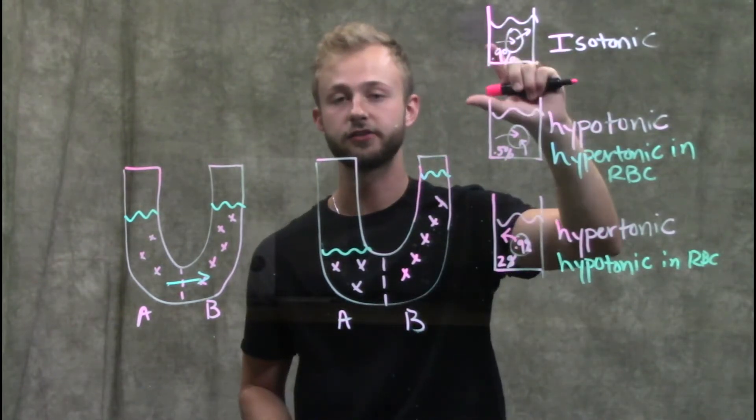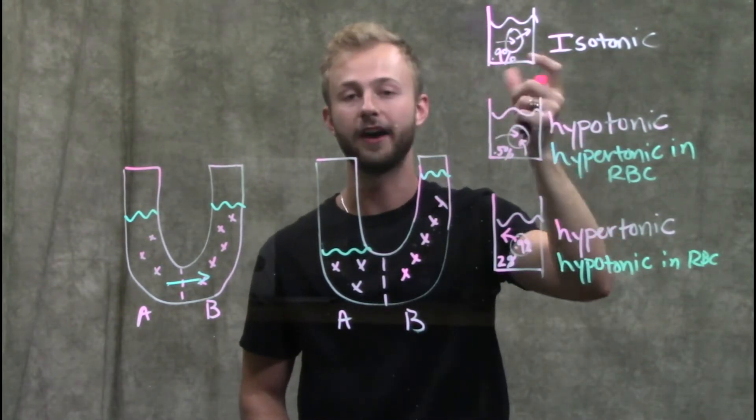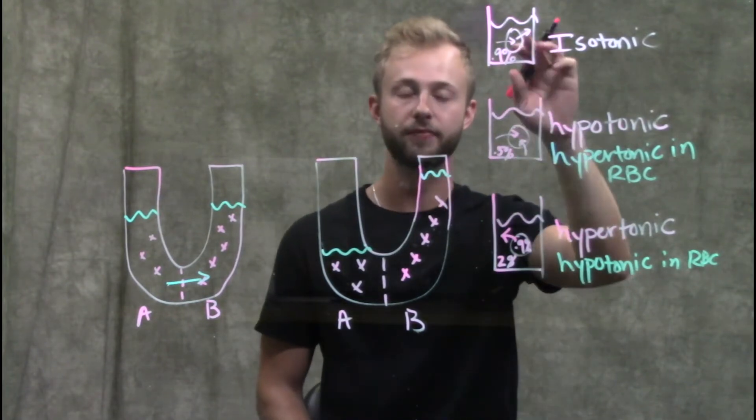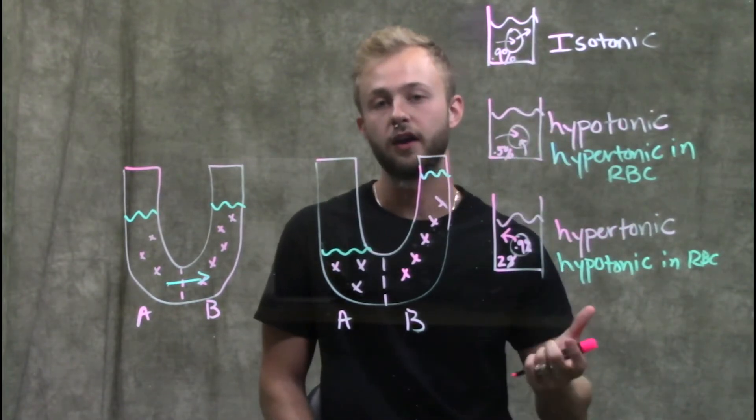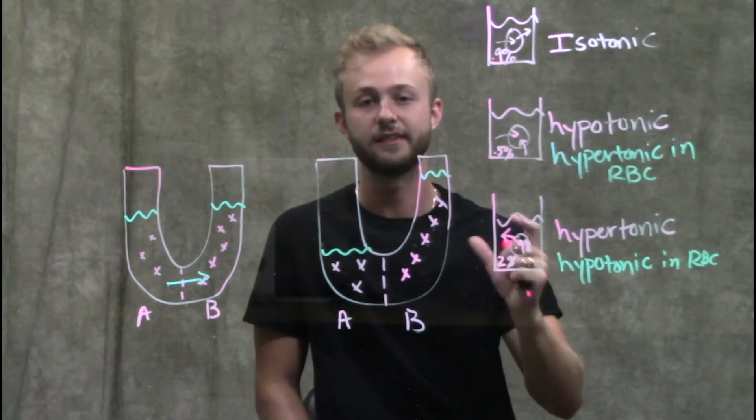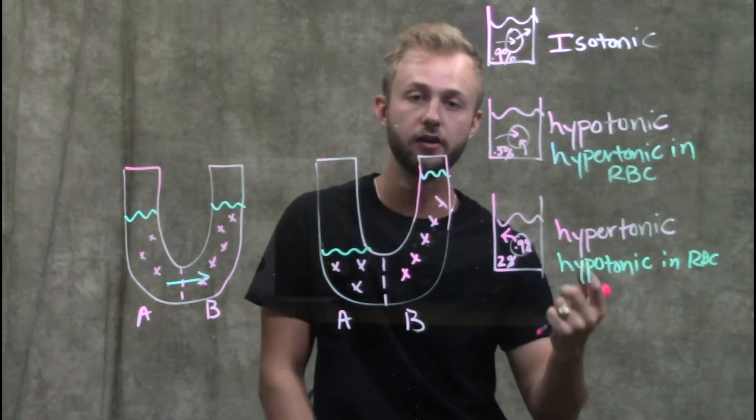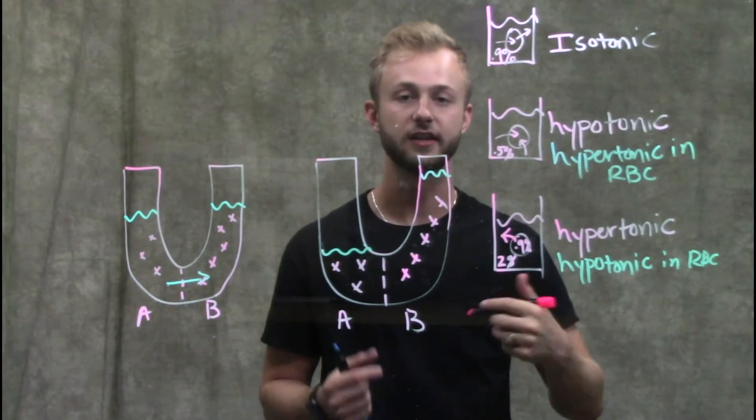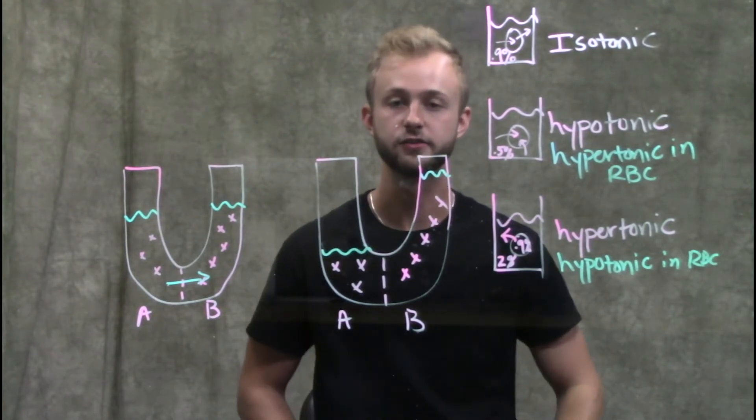Lastly, if the concentration of solute is the same on either side of the blood cell's membrane, then we're not going to have any net change in the size of that red blood cell, although we still have water moving in and out of the cell, just at equal rates, so we don't see any visible change.